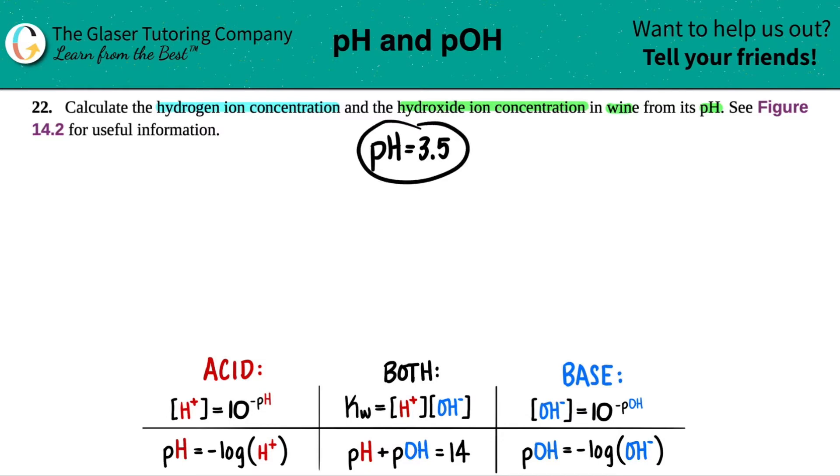Now from this information, they just want to find out the hydrogen ion concentration. This is another word for saying hydronium, which is H+ or H3O+, but I'm going to use H+. And then they wanted to find the hydroxide ion concentration, which is OH-. So basically from just one value, we have to find two individual pieces of information.